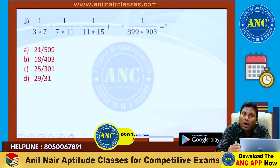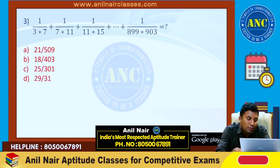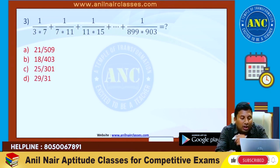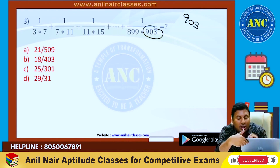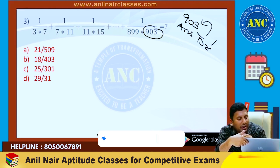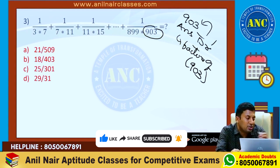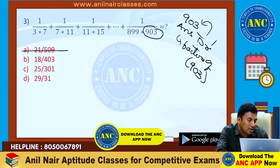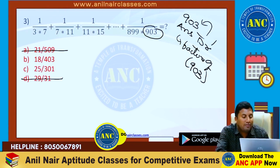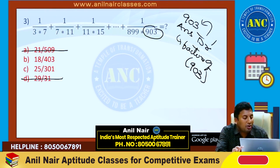Now see here — another one. 1/(3×7) + 1/(7×11) + 1/(11×15) and so on up to 1/903. What is the last numerical value? 903. Answer — denominator: either it will be 903 or it will be a factor of 903. This is an acid test. 509 is not possible. 31 is not possible. We are stuck between 18/403 and 25/301.